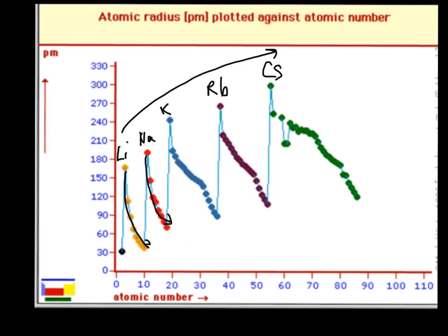So they get smaller, and then they jump up and get big, and then they get smaller, and then they jump up and get big, and then they get smaller. That's the summary of atomic radius.